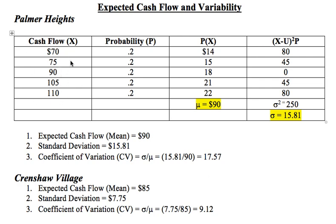For each of these possible cash flow outcomes, you assigned a probability. In this case, the probabilities are 20% for each one. We have five possible outcomes, and since we're dealing with a probability distribution, each outcome was assigned a probability of 20%. So we wanted to come up with what's the expected outcome, the expected cash flow, or simply the expected mean.